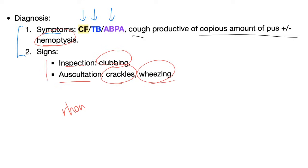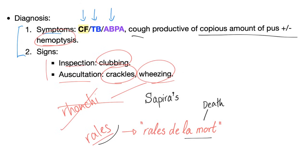Regarding auscultation terminology: historically, 'rhonchi' were differentiated from wheezing, but that term is no longer used. The three adventitious lung sounds you need to know are wheezing, crackles, and pleural friction rub.